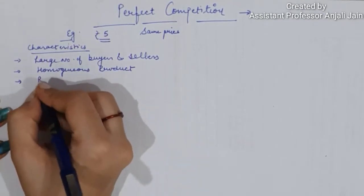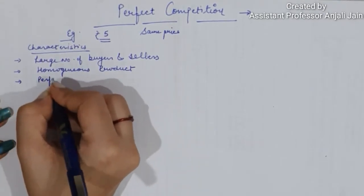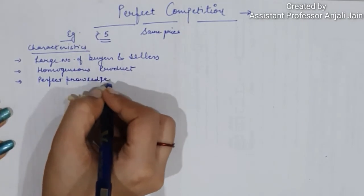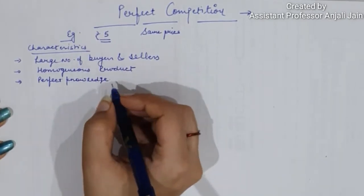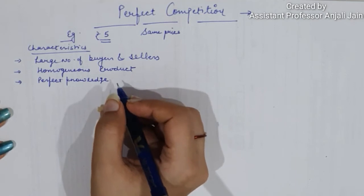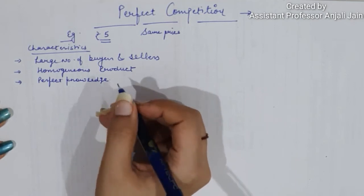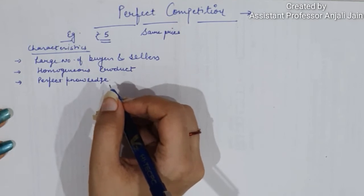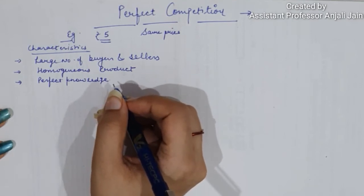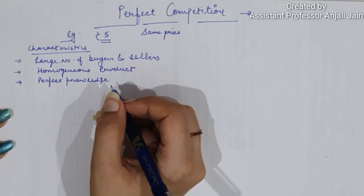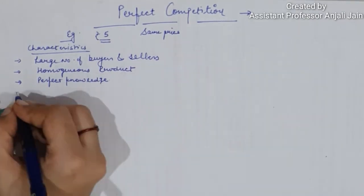Next comes perfect knowledge. Buyers and sellers are fully aware of the price of the product in the market. Buyers have complete knowledge of what price the seller will charge, and sellers have complete knowledge of their buyers' awareness.